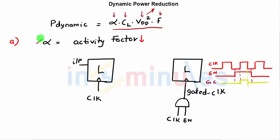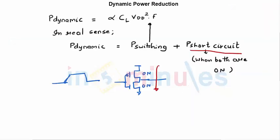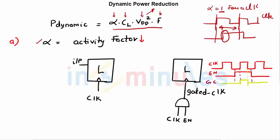The switching activity factor alpha equals 1 for a clock, because in one cycle the clock rises and falls once, so alpha is highest for a clock. Most data inputs switch only once per cycle, giving a switching activity factor of 0.5. However, static CMOS logic has a very low activity factor of around 0.1. Ideally the inputs of static gates don't change for quite a few cycles because the output is steady, so the switching activity factor and hence dynamic power dissipation for static gates is very low.